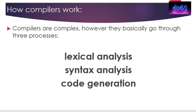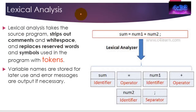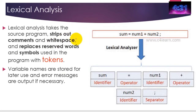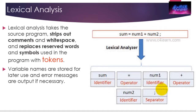Lexical analysis is the idea of taking the code written by the programmer and breaking it down. So you can see here: 'sum' is identified as an identifier, 'equals' is an operator, 'num1' is an identifier, the plus sign is an operator. All lexical analysis does is simply replace these words with the type of command it is and produce a list of tokens. It takes out the white space, removes the comments, and just looks for the code. What we've got here is six tokens: identifier, operator, identifier, operator, identifier, separator.